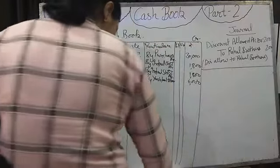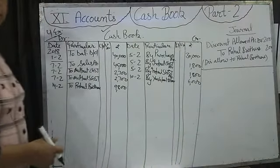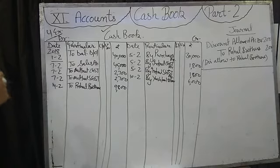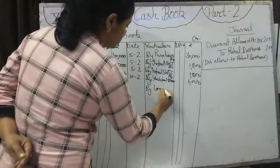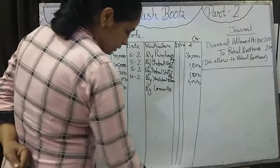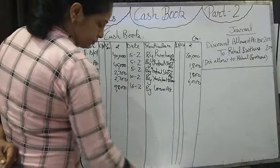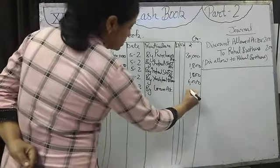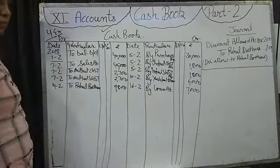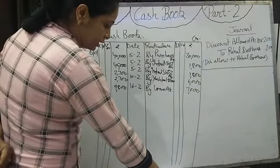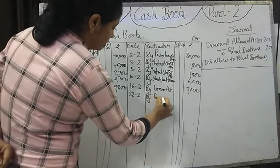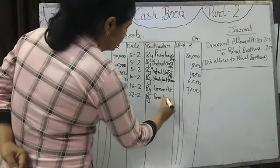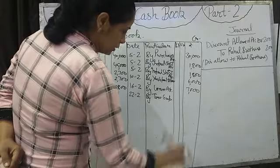Next transaction on 16th February: loan repaid. Repaid means we are paying back a loan we had taken — money is going. We write on the credit side: By Loan Account, date 16th February, amount Rs. 7,000. Next: pay for travelling expense on 22nd February. Money is also going, so credit side: By Travelling Expense Account, amount Rs. 500.